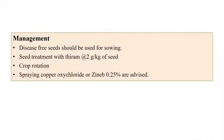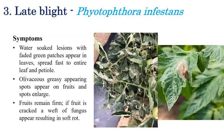For management of early blight, disease-free seeds should be used for sowing. Seed treatment with Thiram at 2g/kg seed is recommended. Crop rotation along with spraying of copper oxychloride or Zineb at 0.25% can be advised for control.